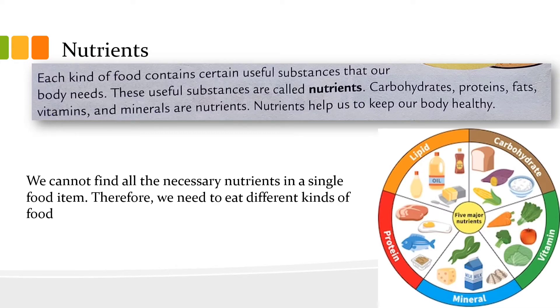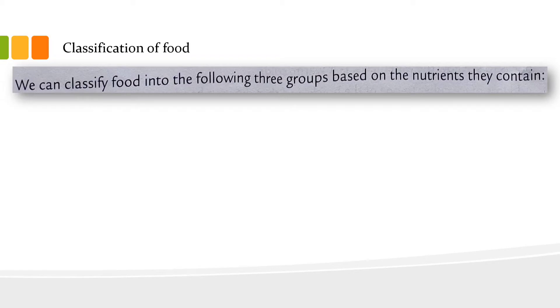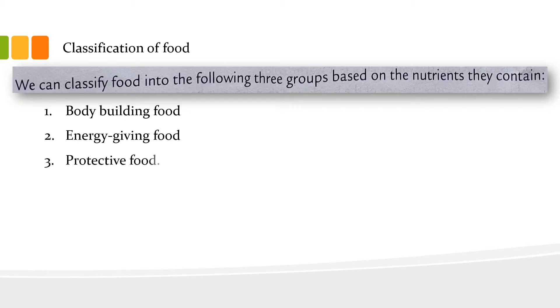We cannot find all the necessary nutrients in a single food item, so we eat different kinds of food from morning to night to get all the nutrients. Let's classify food into the following three groups based on their nutrient content: bodybuilding food, energy-giving food, and protective food.